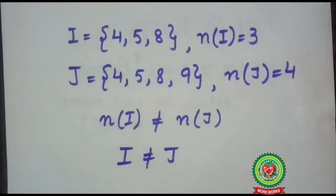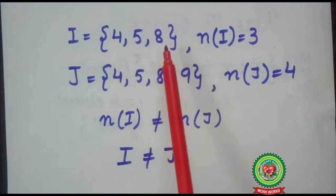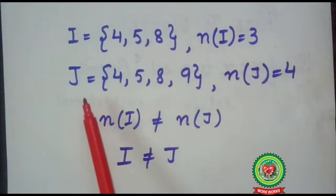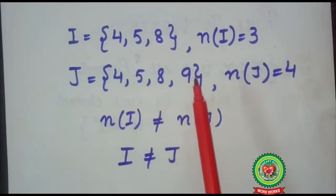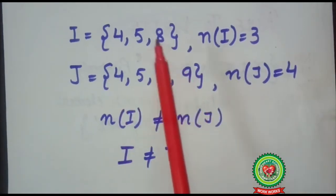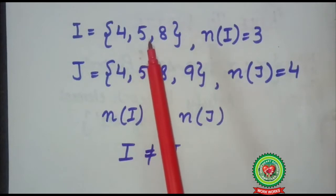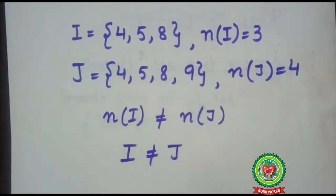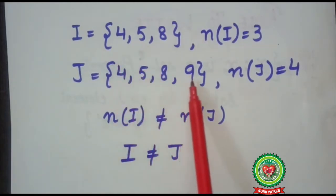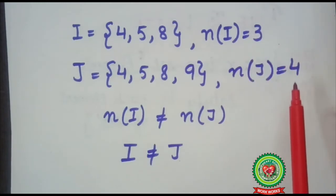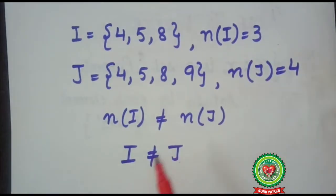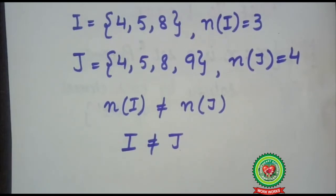One more example: set I is {4, 5, 8} and the cardinal number of I is 3. Set J is {4, 5, 8, 9} and the cardinal number of J is 4. Here 9 is present in J but not in set I, meaning the elements of I and J are not the same. Also the size of the sets is not the same — cardinal number of I is 3 and cardinal number of J is 4. That implies that I is not equal to set J.